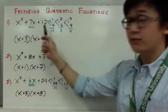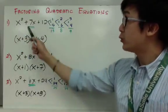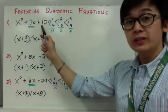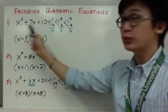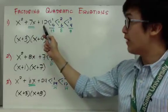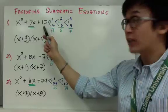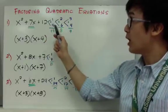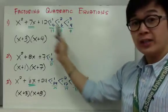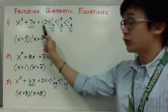To factor this type of equation, all you need to do is look at the last term, or the constant term. The constant term will decide how you're going to factor out your quadratic equation. So you have to list down all the possible factors for 12. For 12, we can have 1 times 12, 2 times 6, and 3 times 4.